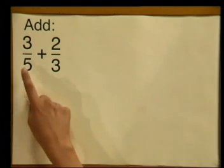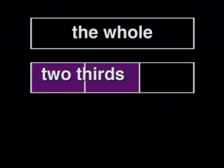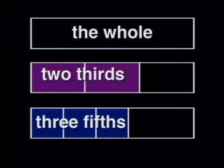I am going to add 3 divided by 5 and 2 divided by 3, but do you remember that we can only add fractions that are like? Fractions that are like are fractions that have the same denominator. Let me show you in a diagram. Here is a whole. This is two-thirds of the whole, and this is three-fifths of the whole.